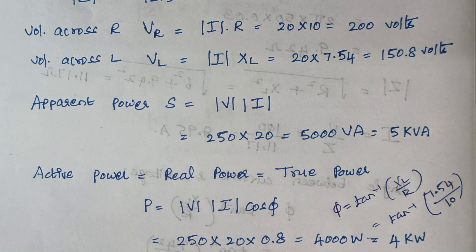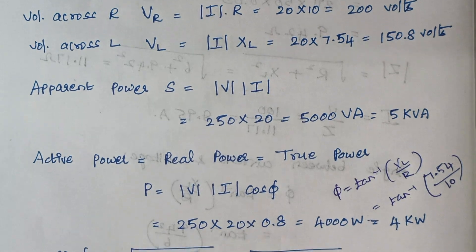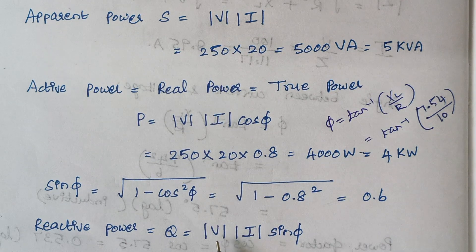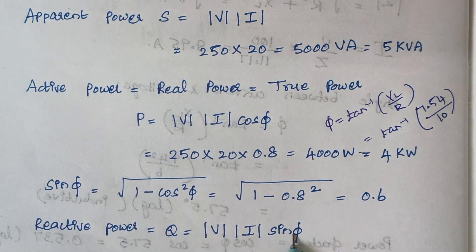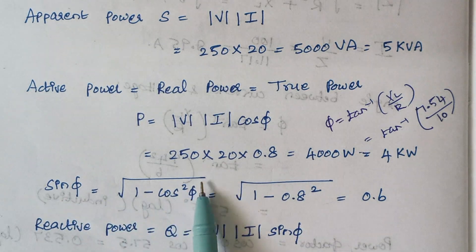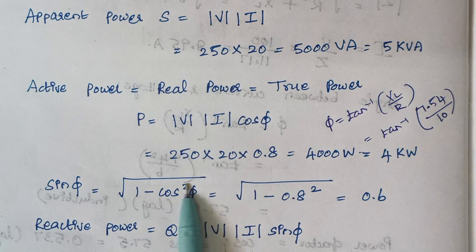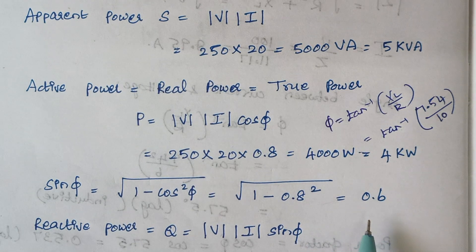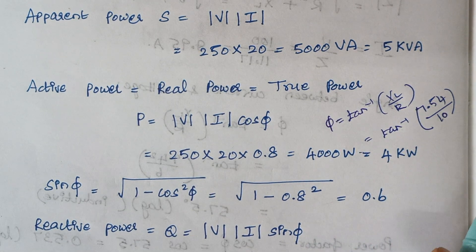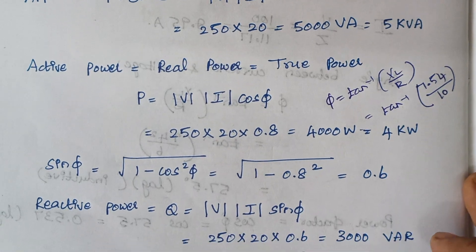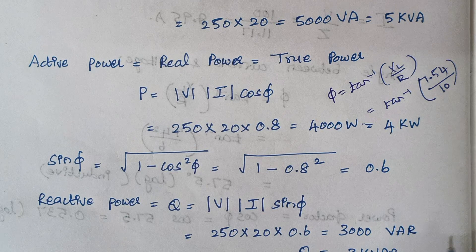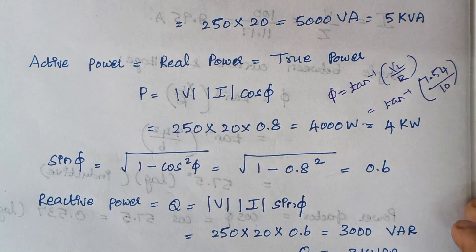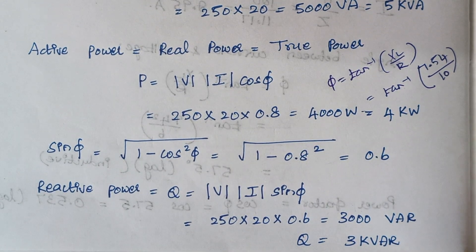The next step is to calculate reactive power Q, given by the formula VI sin φ. We know V and I, but need sin φ, calculated as the square root of 1 − cos²φ. Since cos φ = 0.8, we get sin φ = 0.6. So 250 × 20 × 0.6 gives 3000 VAR, which is 3 kVAR (volt ampere reactive).